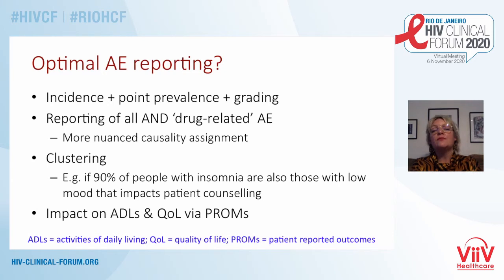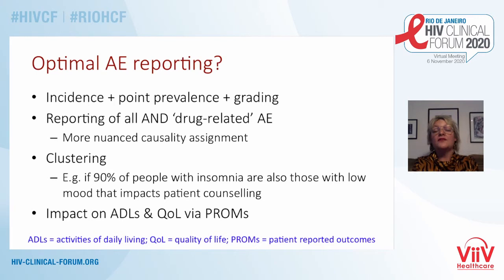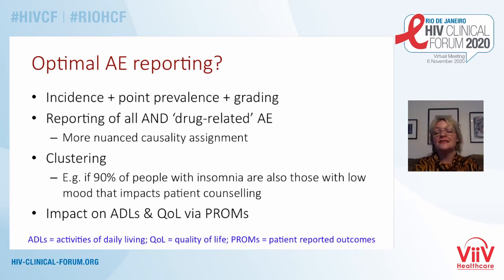Optimal adverse event reporting would include incidence and point prevalence as I showed in that STRIBILD graph, but also grading — breaking down those bars into grades 1, 2, 3, or 4 adverse events. Reporting all as well as drug-related adverse events so we can make our own decisions, and more nuanced causality assignments with probable and possible categories. Clustering is also important — if 90% of people getting insomnia on a drug are the same people who get depression, that helps when counselling patients. And perhaps most importantly, the impact on activities of daily living and quality of life captured through patient-reported outcomes should be standard in all trials.